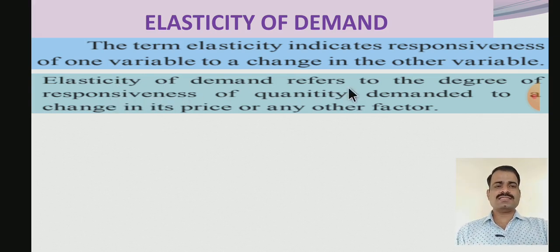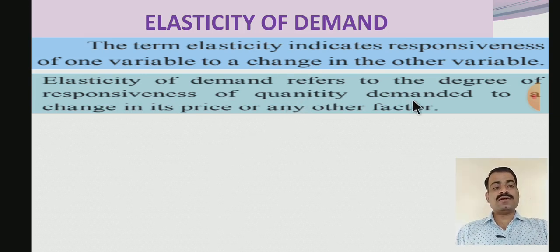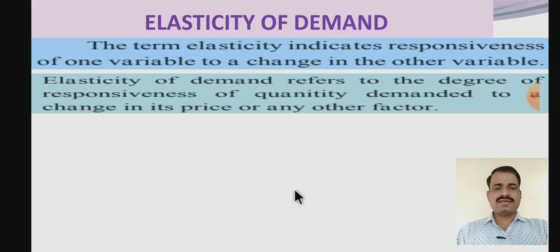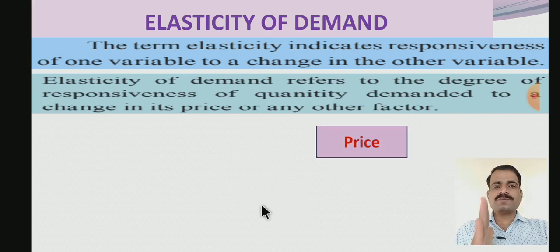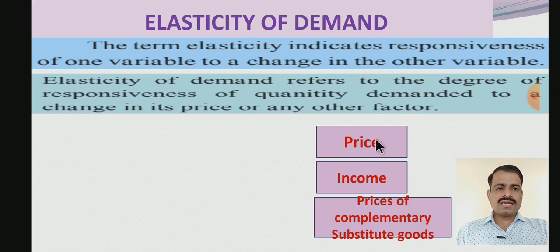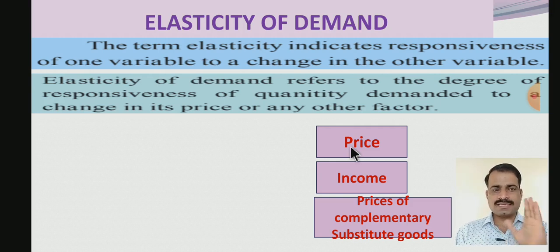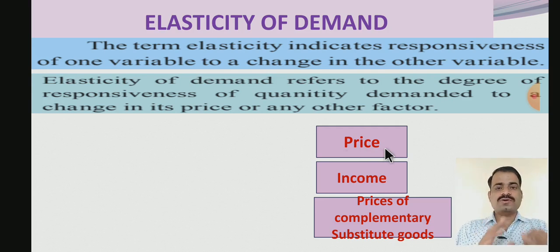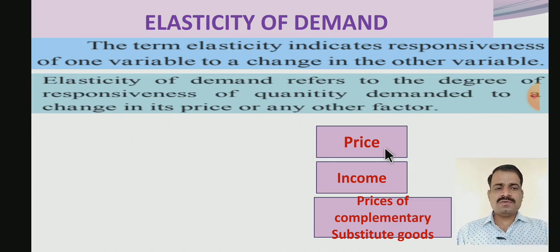Elasticity of demand refers to the degree of responsiveness of quantity demanded. How many quantities of a commodity will be demanded depends on three factors: one is the price of that particular commodity, another is consumer's income, and the last one is prices of complementary and substitute goods. When the price of a given commodity changes, it impacts quantity demanded. When price rises, less quantity is demanded; if price decreases, more quantity is demanded.